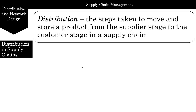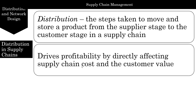Distribution is the steps taken to move and store a product from the supplier stage to the customer stage in a supply chain. This drives profitability by directly affecting supply chain cost and customer value. Distribution occurs between every pair of stages in the supply chain.